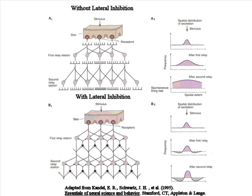Lateral inhibition is an important circuit phenomenon that frequently occurs in situations when an array of sensory receptors maps the spatial distribution of a sensory stimulus. Examples include retinal and subretinal circuits of the visual system, or the mechanosensory receptors detecting stimuli over the surfaces of the body.